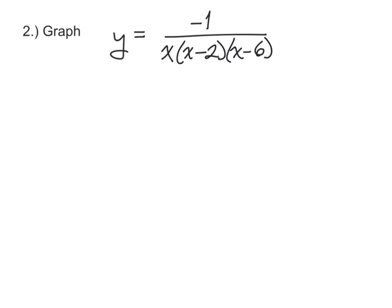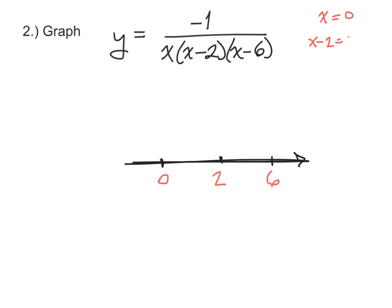Let's try one more. First, draw the x-axis and identify the important points. Looking at the denominator, we have three factors: x, (x minus 2), and (x minus 6). Each gives a vertical asymptote. Setting each factor equal to 0: x equals 0, x minus 2 equals 0 gives x equals 2, and x minus 6 equals 0 gives x equals 6. So we have vertical asymptotes at 0, 2, and 6, marked with dotted lines.